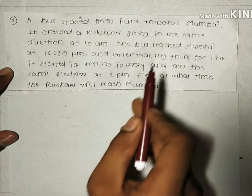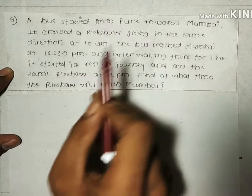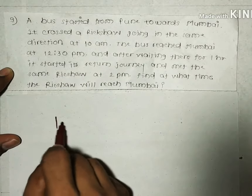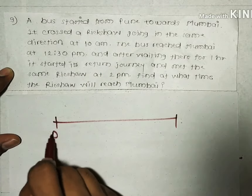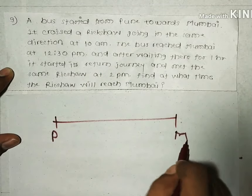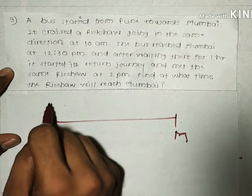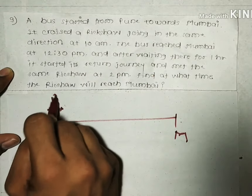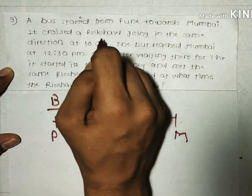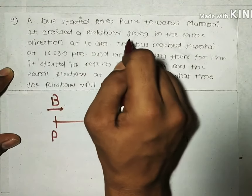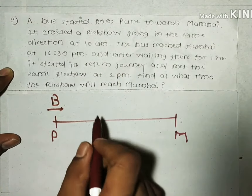A bus started from Pune towards Mumbai. This is Pune and Mumbai is there. The bus is going and it crosses a rickshaw going in the same direction at 10am.